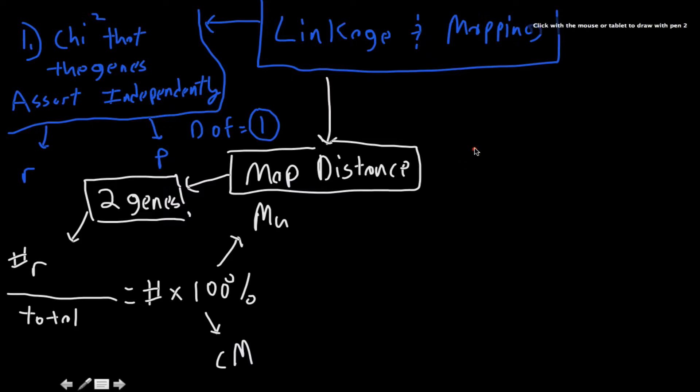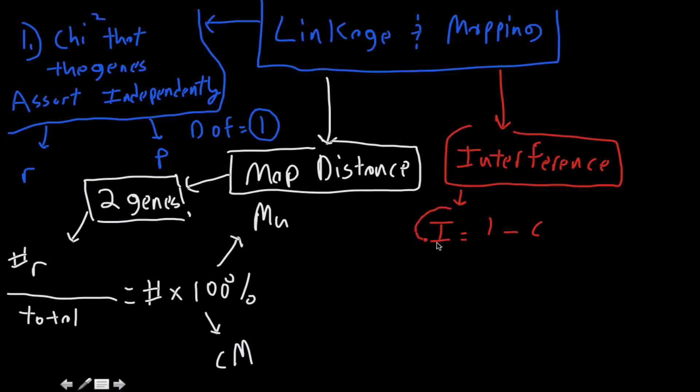Okay, so the other thing that you need to know is something called interference. So interference is defined as 1 minus the coefficient of coincidence, I'll explain what that is later. And what this does is, the problem with the reason that we have to do this though, is because of double crossovers, map distance is underestimated. So map distance is underestimated because of these double crossovers.